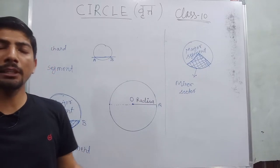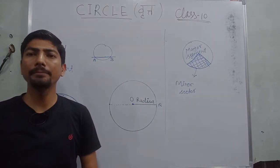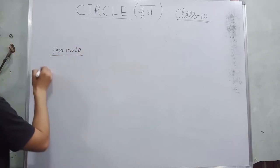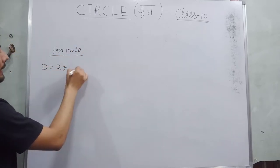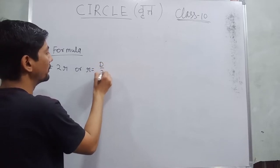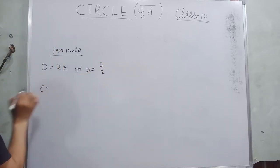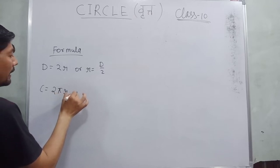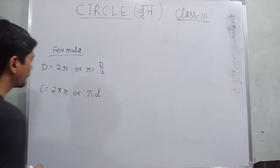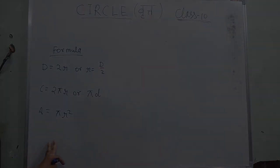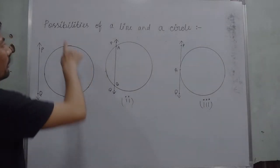So these are some terms related to a circle. Now we are discussing some formulas. The first formula is: diameter D = 2R. In terms of radius: R = D/2. Now circumference — denoted by capital C — circumference of a circle = 2πR, or in terms of diameter = πD. And the last one is area: Area = πR². These are some formulas related to a circle, so remember these formulas.